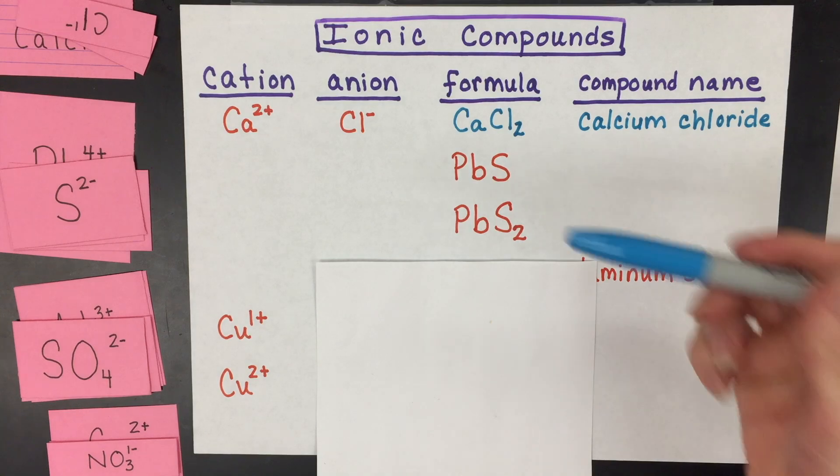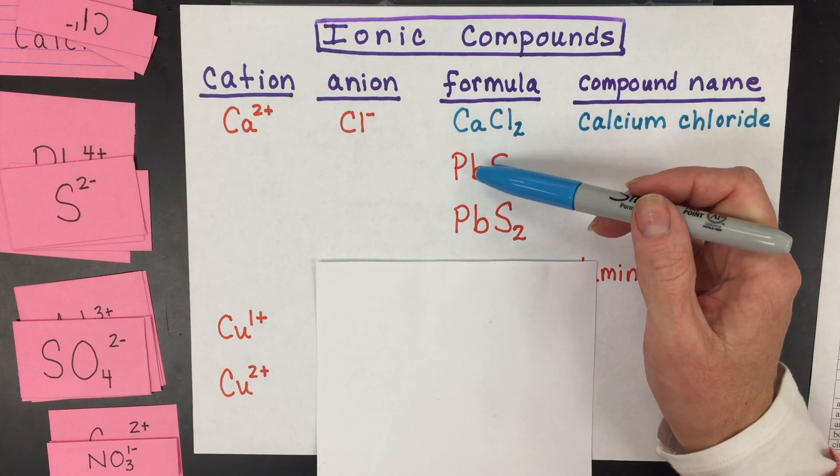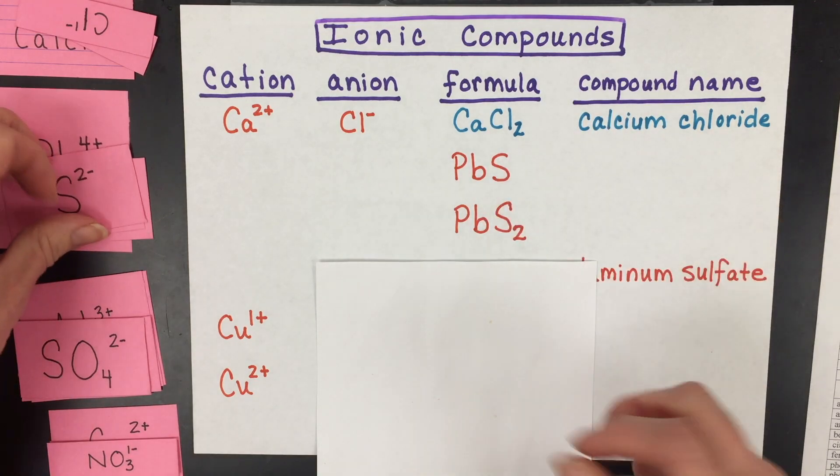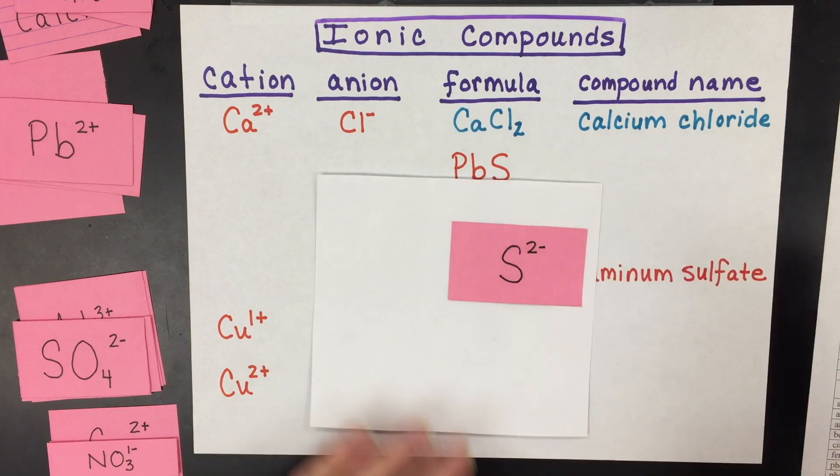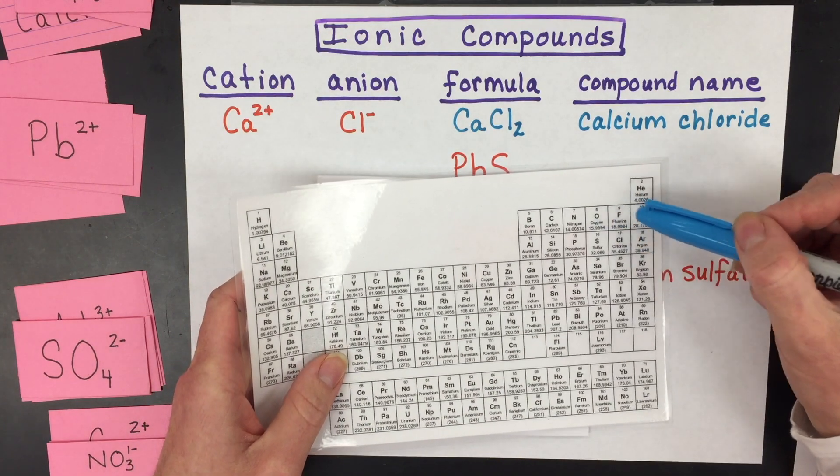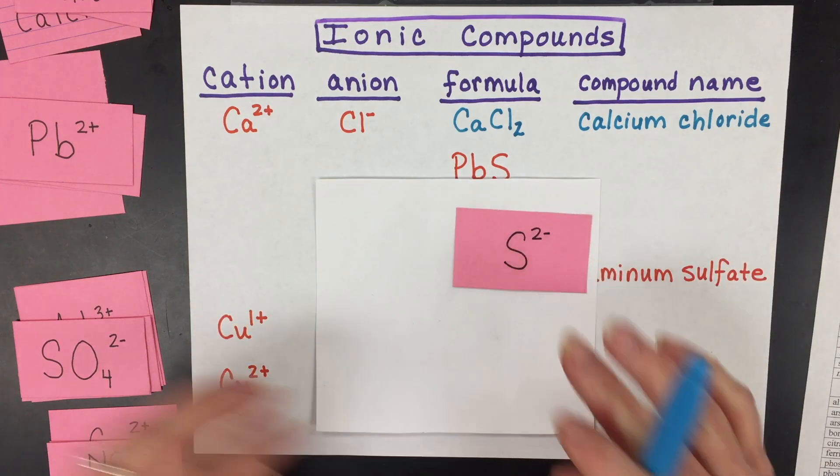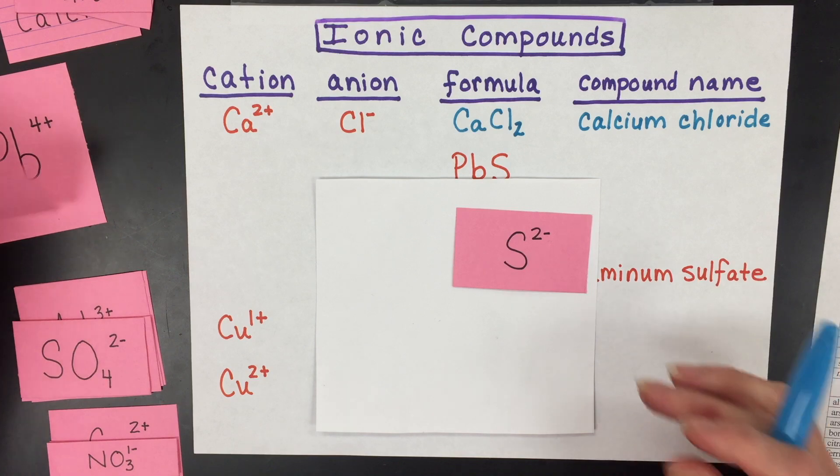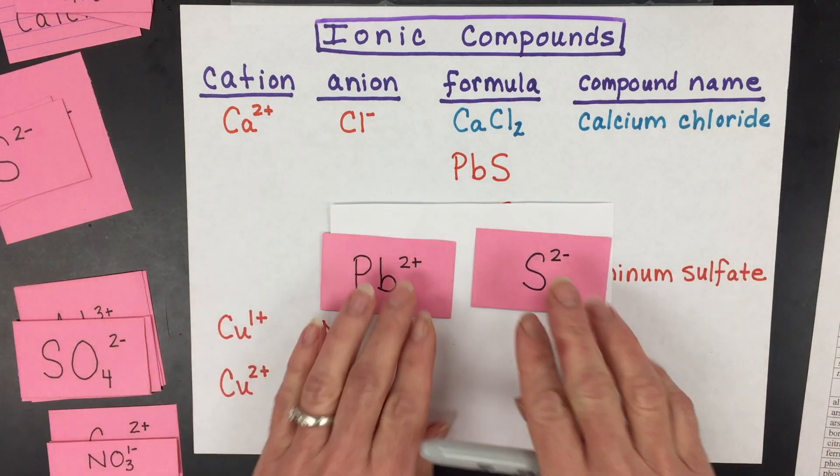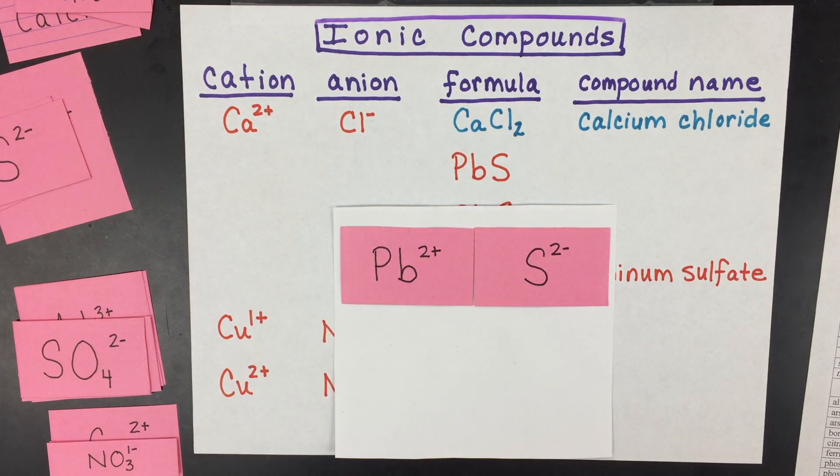Our second and third examples look very similar. They both have the element lead, but the charge must be different because sulfur turning into sulfide is always a two minus. On the periodic table, it is two electrons away from having a noble gas configuration, so it's going to gain two electrons.